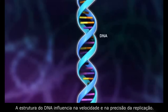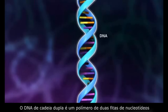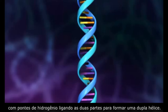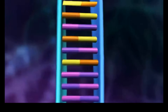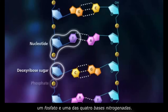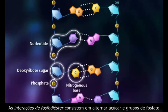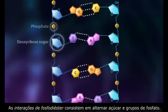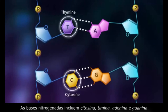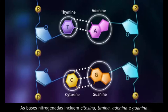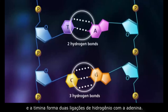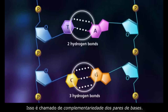The structure of DNA aids in the speed and accuracy of replication. Double-stranded DNA is a polymer of two strands of nucleotides, which are hydrogen-bonded to each other to form a double helix. Nucleotides are molecules that consist of a deoxyribose sugar, a phosphate, and one of four nitrogenous bases. The phosphodiester backbones consist of alternating sugar and phosphate groups. The nitrogenous bases include cytosine, thymine, adenine, and guanine. Cytosine forms three hydrogen bonds with guanine, and thymine forms two hydrogen bonds with adenine. This is referred to as complementary base pairing.